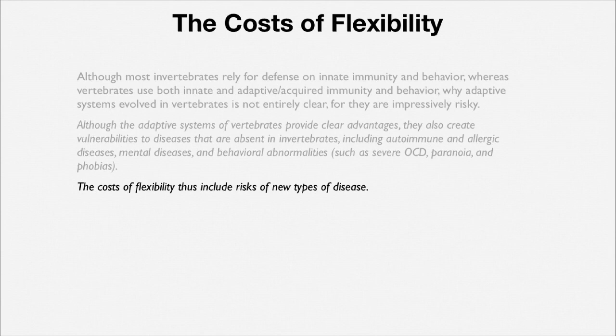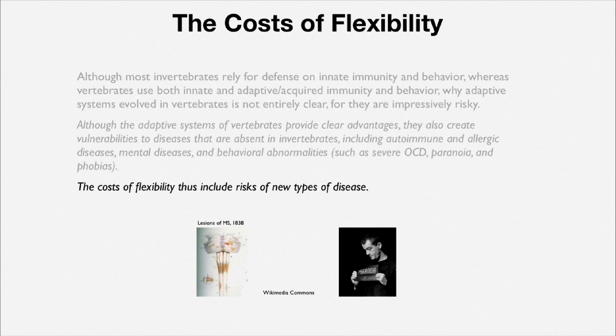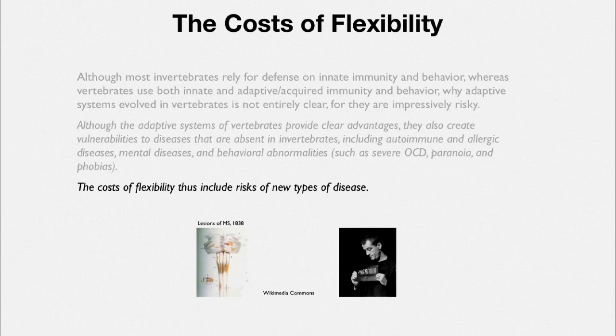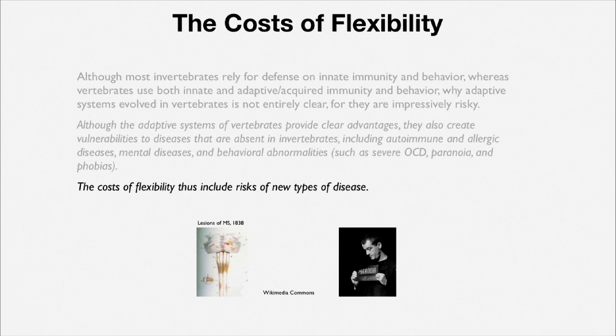The cost of flexibility includes the risks of new kinds of disease. Here is an 1838 illustration of multiple sclerosis where the base of the brain and the spinal cord are being attacked by cells in our adaptive immune system. And something like paranoia is a disease of a brain with tremendous capacity to learn and emotional intelligence — but if that's exaggerated in the wrong way, it can lead to pathology.